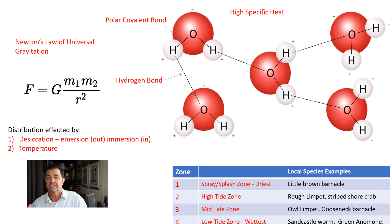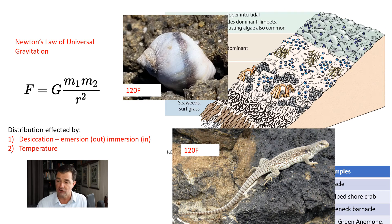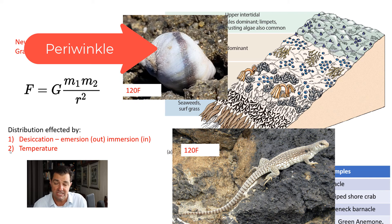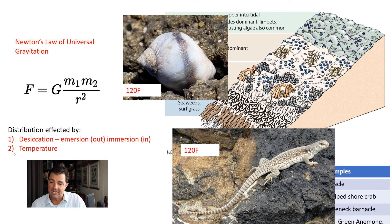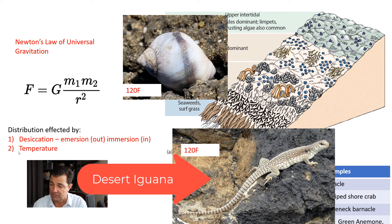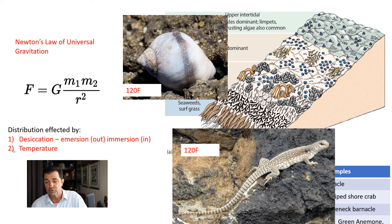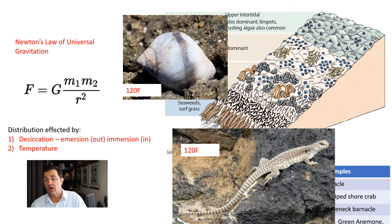Animals in tide pools or rocky intertidal zones have to withstand temperature changes that can be pretty severe. One little type of snail, a periwinkle snail, can withstand temperatures of 120 degrees Fahrenheit and is found in zone one of the intertidal zone. That's similar to the desert iguana, which can also typically withstand temperatures of 120 degrees. So animals living in rocky intertidal zones, if they're going to be stuck out on land, have to be able to withstand these extreme temperatures.